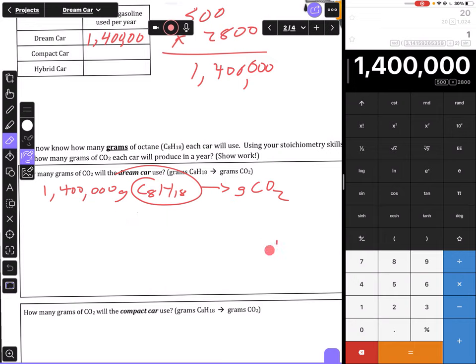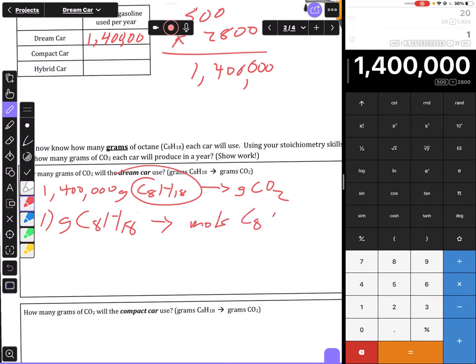My last step, once I'm in moles of CO2, will be to convert that to grams. My first step goes from grams of C8H18 to moles of C8H18 using the molar mass - taking my grams divided by the molar mass of C8H18. My second step: I'm in moles of C8H18 and want to go to moles of CO2 using my balanced equation - it's a 2 to 16 ratio. My third step: I'll be in moles of CO2 and want to convert that to grams of CO2 by multiplying by the molar mass of CO2.